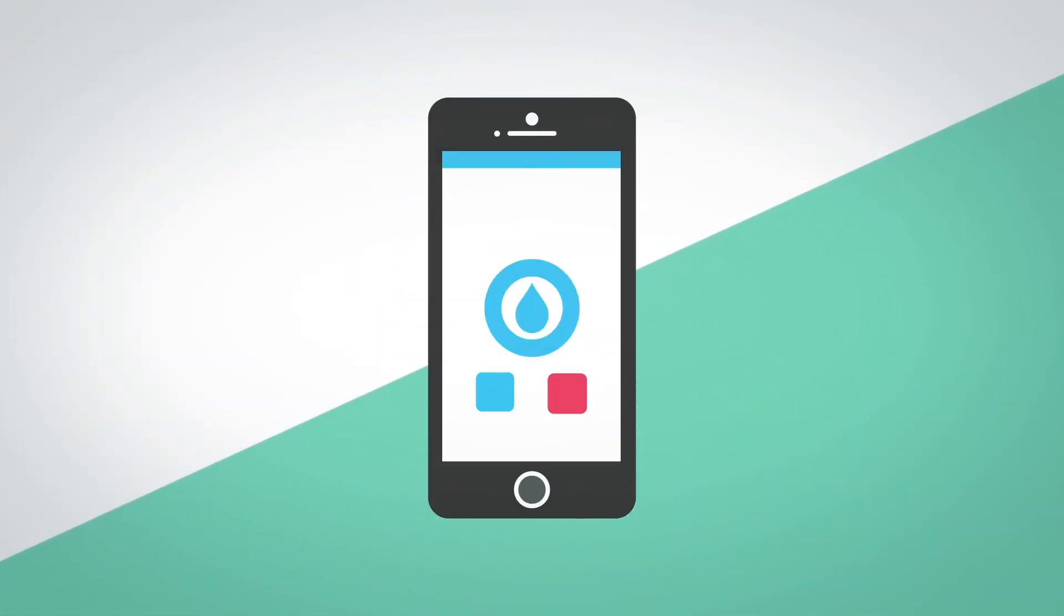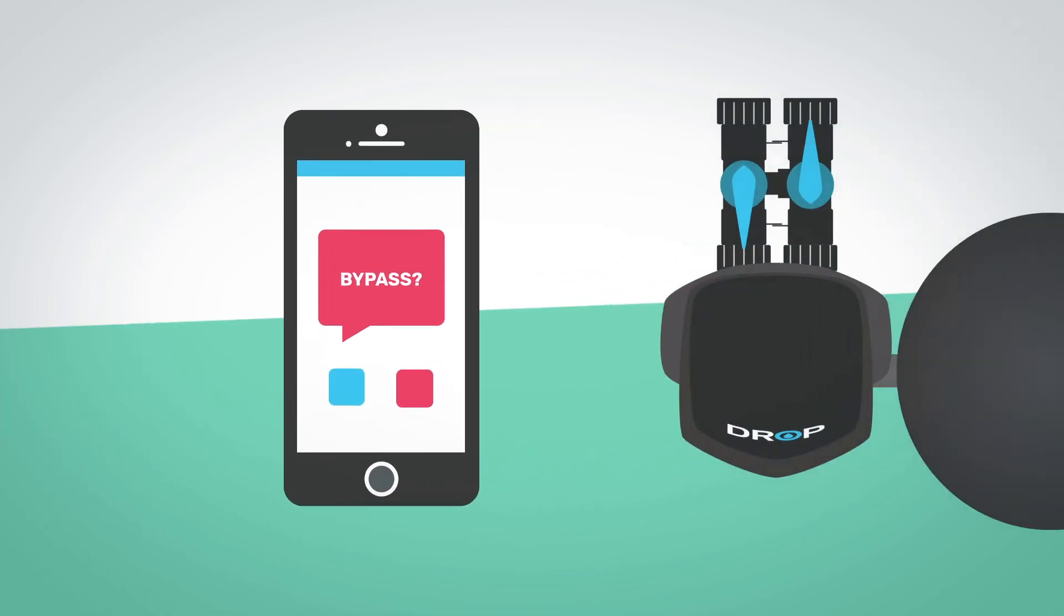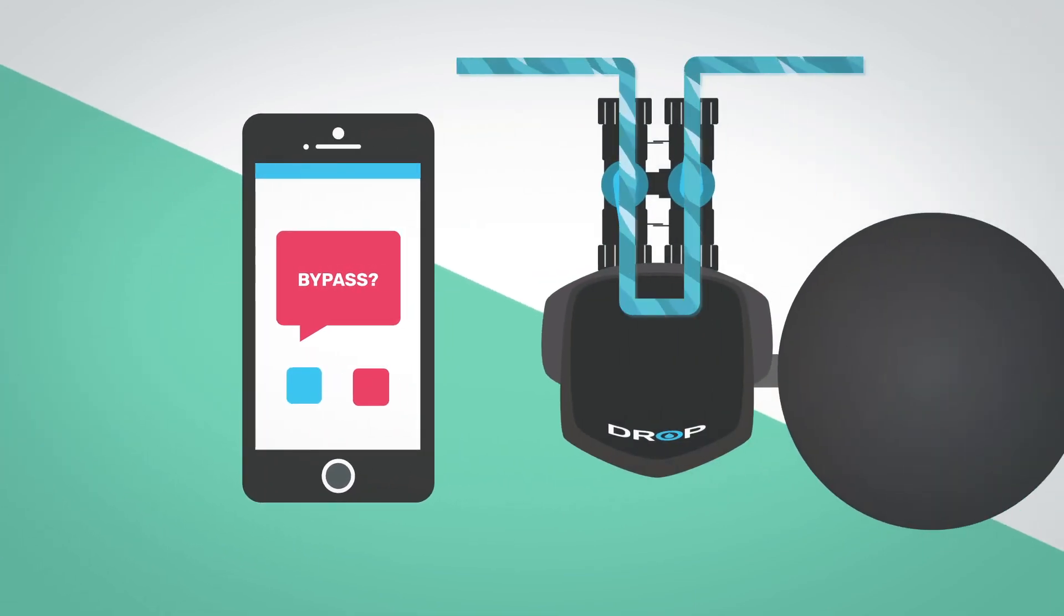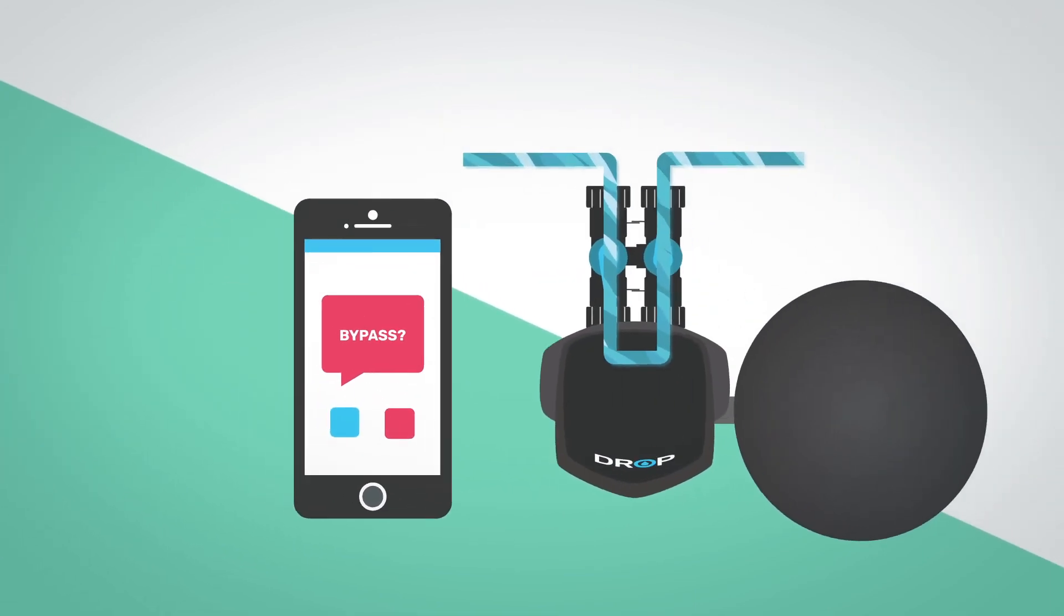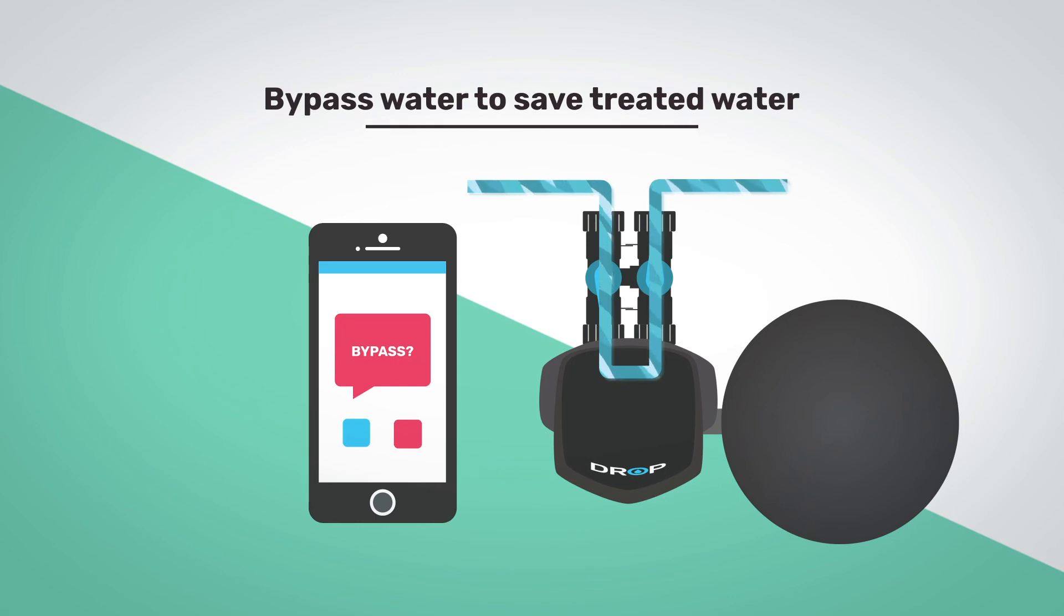Another unique feature offered in the DROP aeration filter is the ability to remotely bypass treatment. If you happen to be outside watering the garden and you don't want to waste treated water, turning off treatment is as simple as opening the DROP app and touching a button.